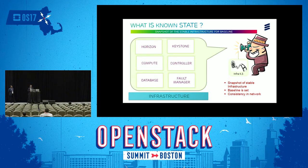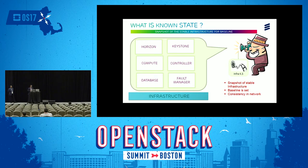Once the data is collected, we have to analyze it. This analysis involves recommendations from architects, design and testing recommendations, and referring to any relevant release notes for the infrastructure. Based on the analysis, we finalize the baseline, and once the baseline is finalized it is deployed into the network. We will see this in detail in the coming section covering the different phases in achieving a known state.